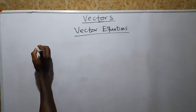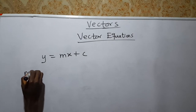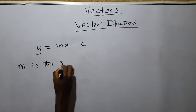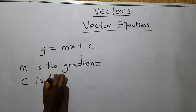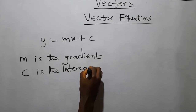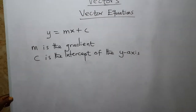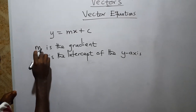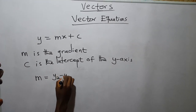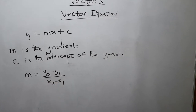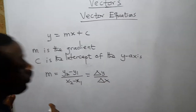We know that the general form of the equation of a line is given as y = mx + c, where m is the gradient or slope, and c is the intercept — specifically the intercept of the y-axis. The gradient m, which is the slope, is equal to (y₂ - y₁) / (x₂ - x₁), which is the change in y over the change in x.